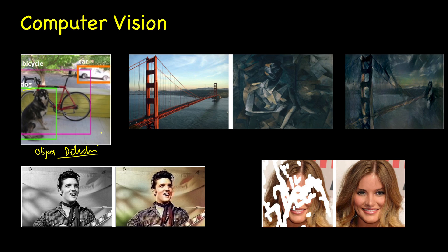Another application is image colorization — you see here a black and white image that has been converted to a colored image using deep learning.